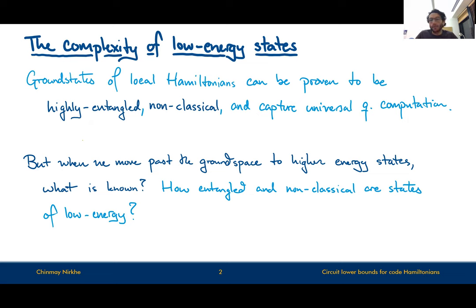An overarching goal of this line of research is to understand the complexities of these higher energy state systems. How entangled are they? How non-classical are they? And do they capture universal quantum computation? These questions are interconnected to a variety of questions in quantum complexity theory, ranging from the quantum PCP conjecture to more practical ideas and constructions of quantum devices. But today we'll focus on a very small section of that research world and quickly make these broad points rigorous.